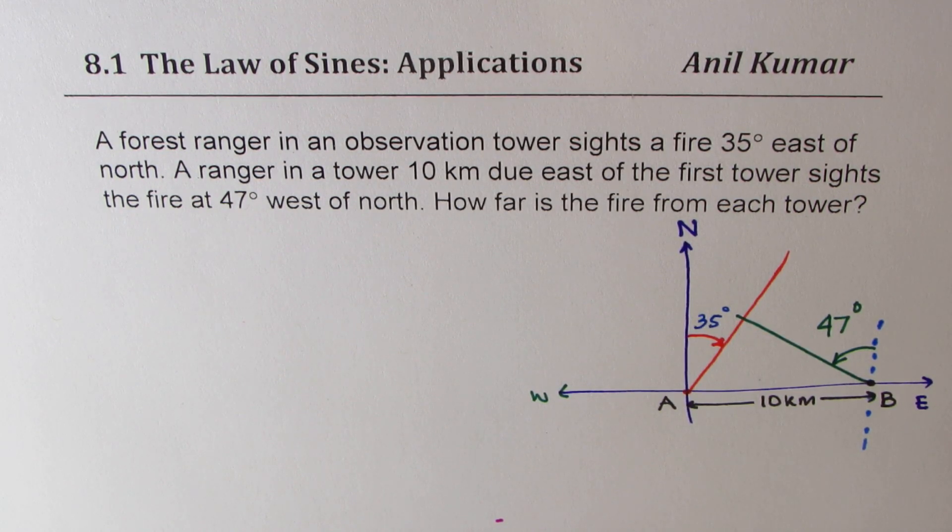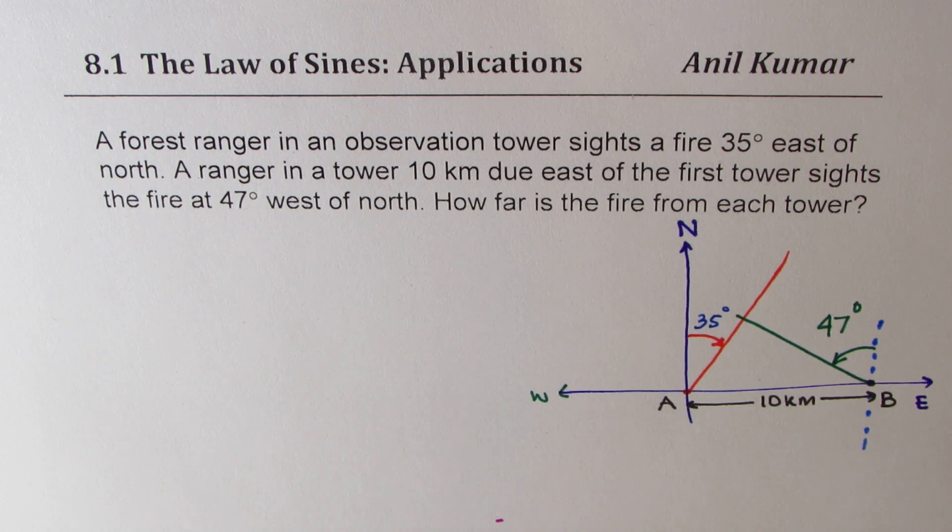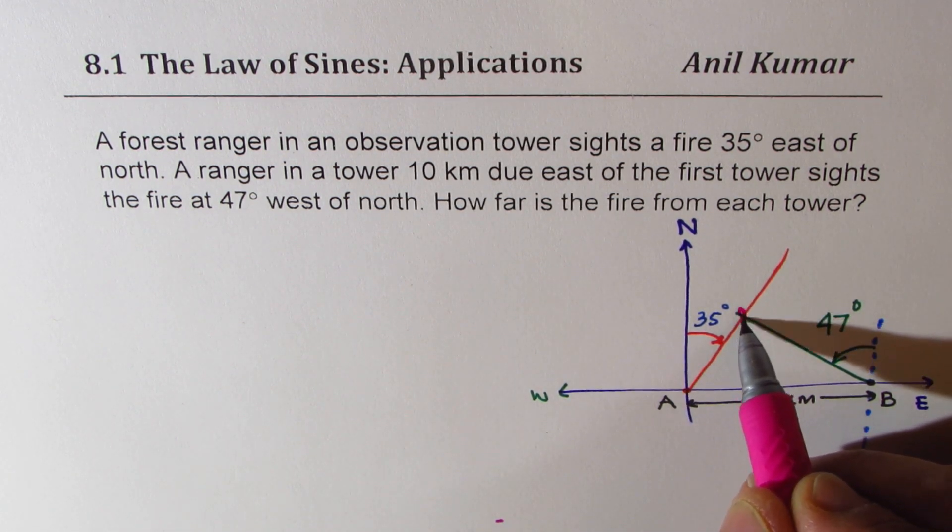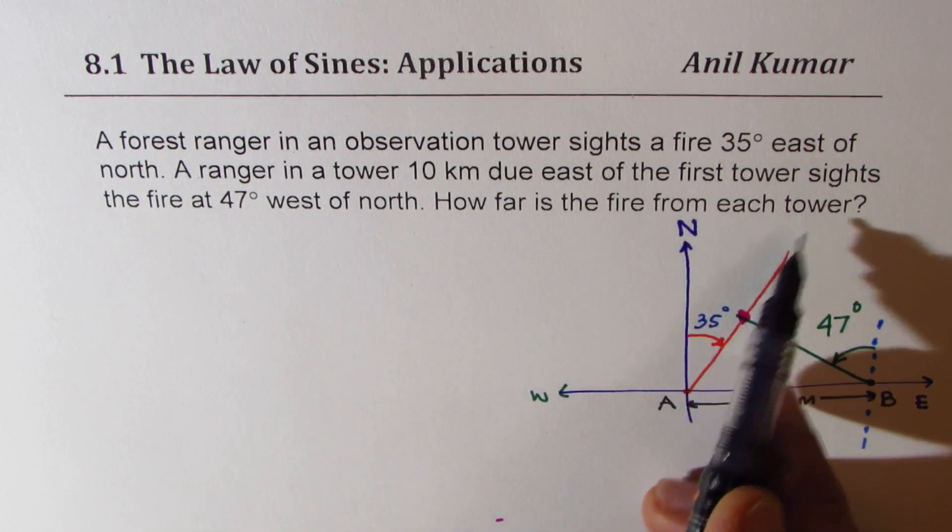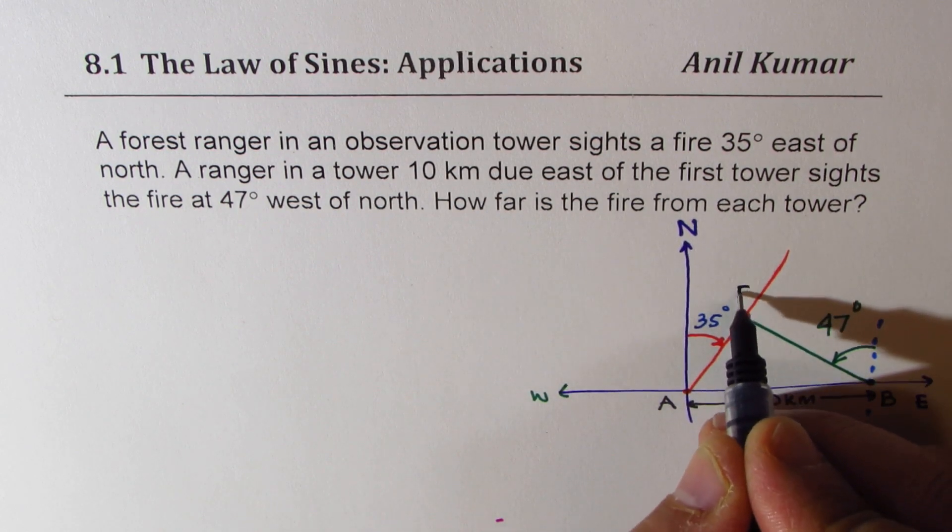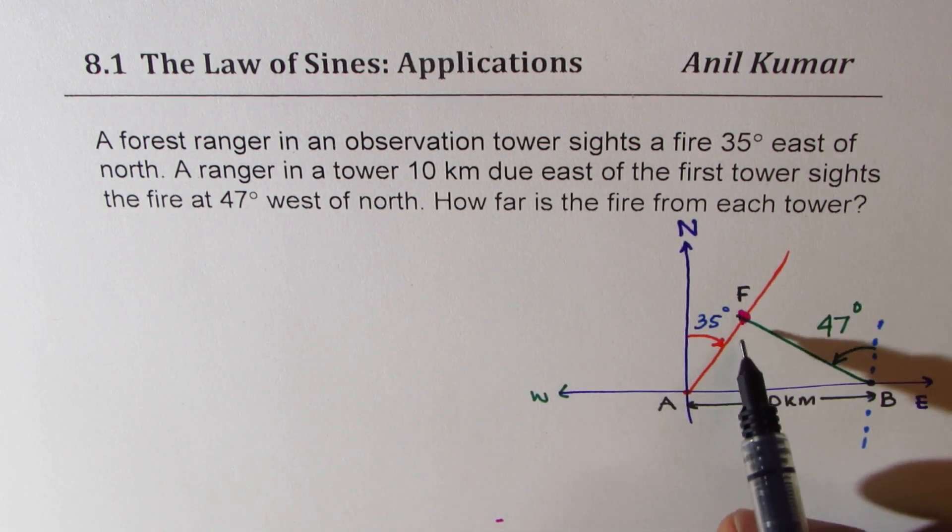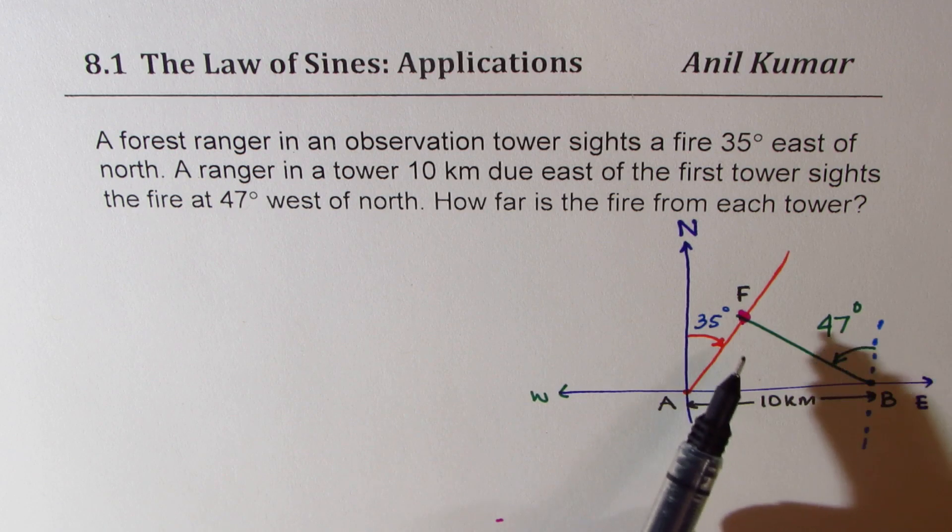Once you've done that, then we are looking at the fire. So the fire is at this spot and we need to find how far is the fire from each tower. So let's call this point as F and we need to find what is AF and what is BF. So I hope now it is simpler. You can always pause the video and answer the question.